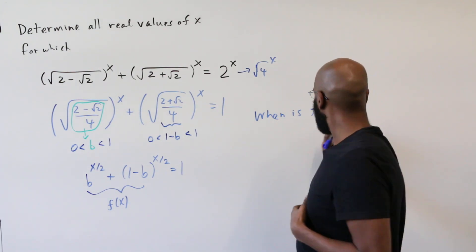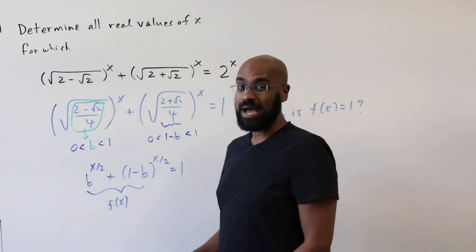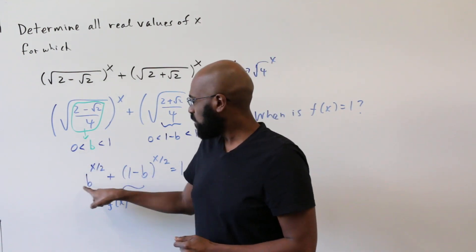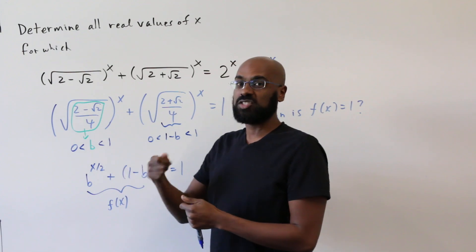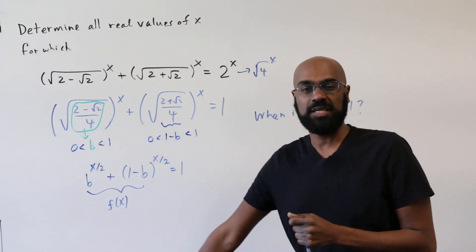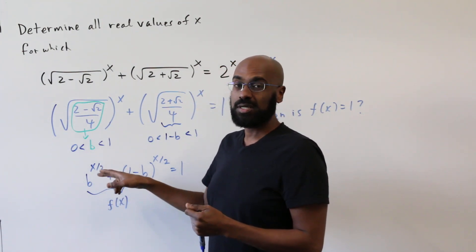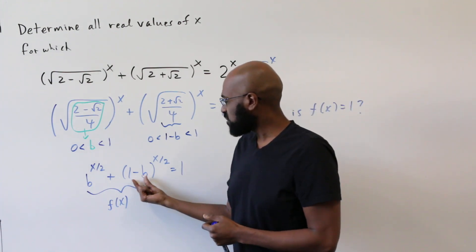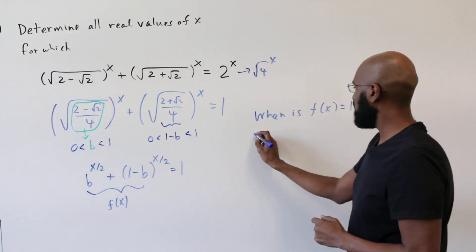One way to address this is to ask if we understand any properties of the graph of this function if we graphed it as y equals f of x. Since b is strictly between 0 and 1, when we raise b to larger and larger powers, b to that power gets smaller — so the piece b to the x over 2 is a strictly decreasing function. Similarly, because 1 minus b is also between 0 and 1, that piece is also decreasing. So f of x is actually a decreasing function.